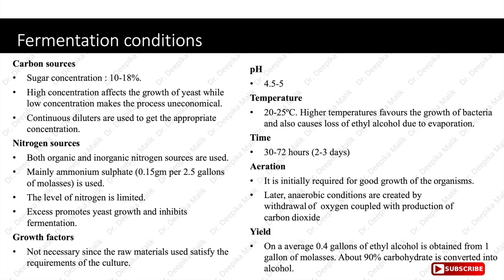Time duration for ethanol production is 30 to 70 hours, that is 2 to 3 days. Aeration is initially required for good growth of the organism. Later, anaerobic conditions are created by withdrawal of oxygen, coupled with production of carbon dioxide. On average, 0.4 gallons of ethyl alcohol is obtained from 1 gallon of molasses, with about 90% of carbon dioxide converted into alcohol.